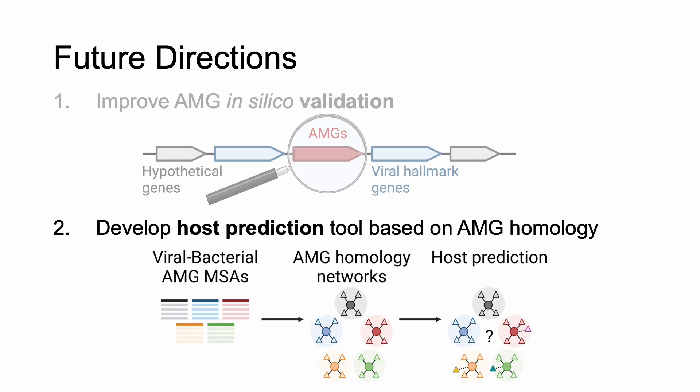Second, a major roadblock in the field of viromics and viral ecology is bacterial host prediction. AMGs are thought to be derived from their host counterpart metabolic genes, so one strategy I propose is to use AMG homology to create bacterial-viral networks that could potentially link phage to their host.